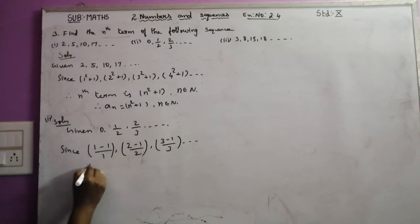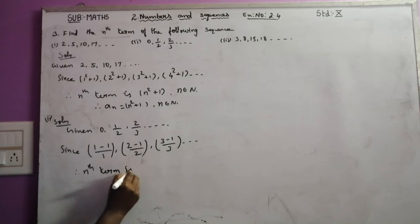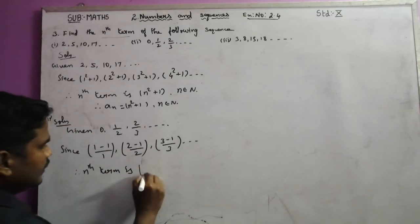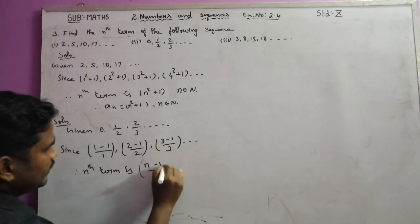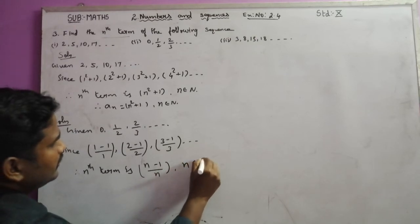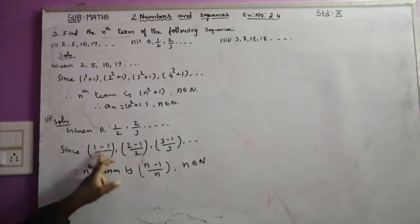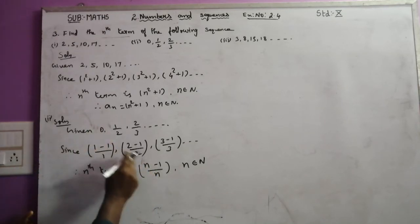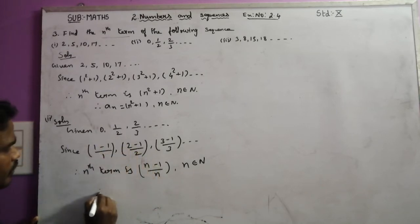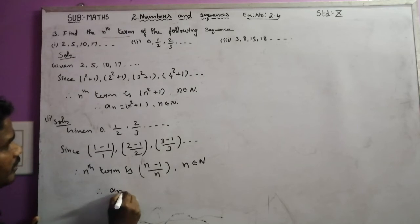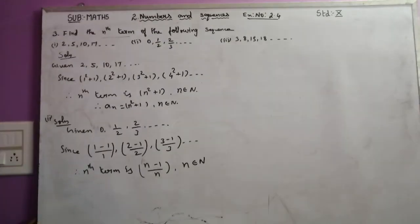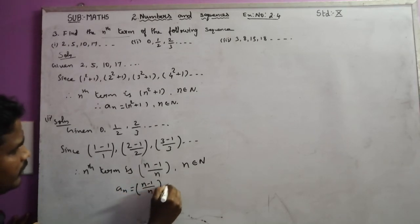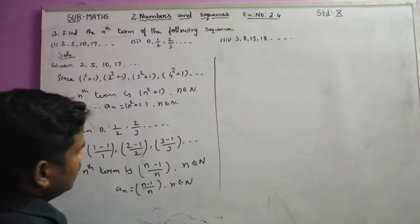Therefore the nth term is n minus 1 divided by n, where n belongs to the natural numbers. a(n) = (n − 1) / n, n belongs to the natural numbers. Second solution complete.